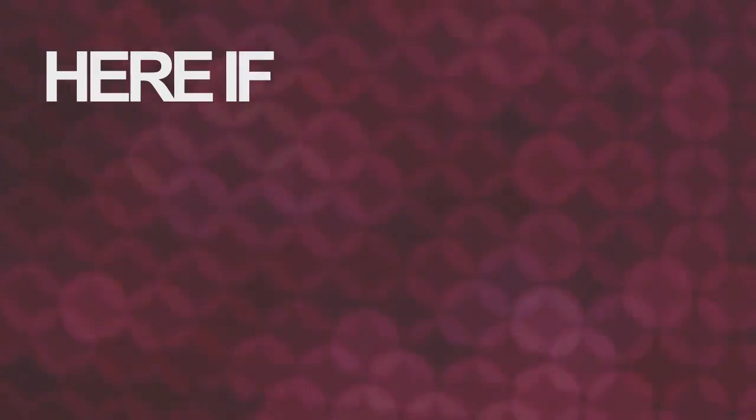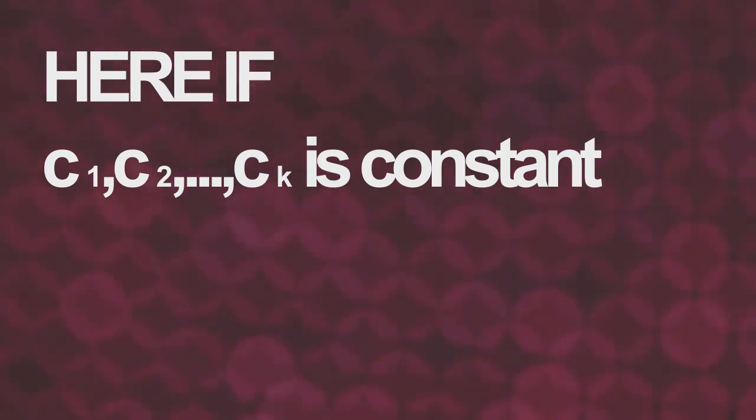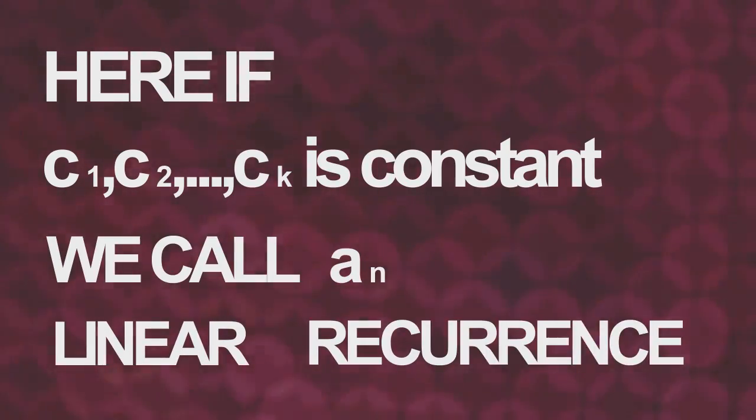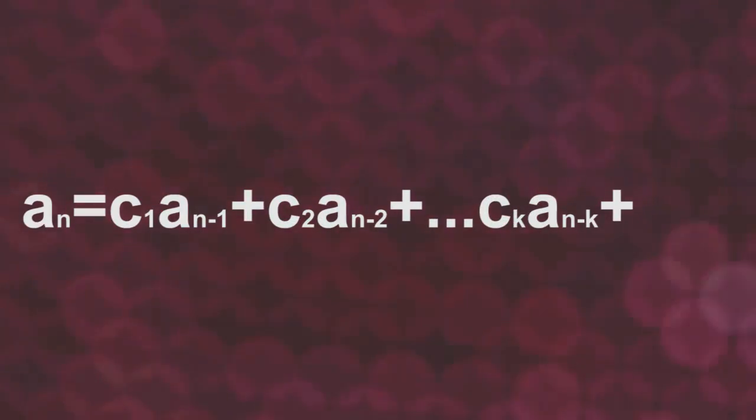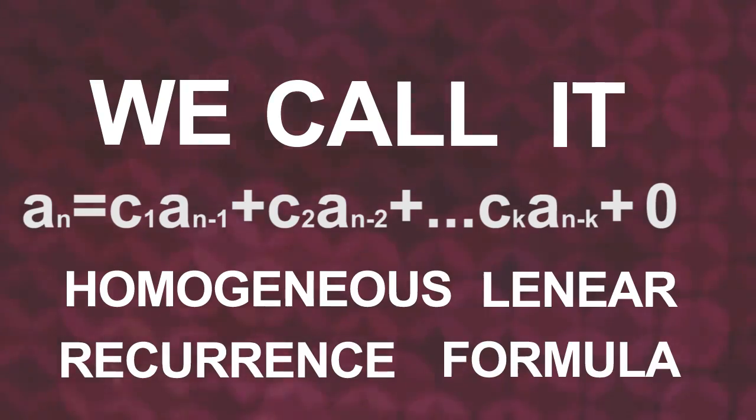Here, if c1, c2 to ck is constant number, we call it linear recurrence. Also, if in linear recurrence, bn is equal to 0, we call it the homogeneous linear recurrence formula.